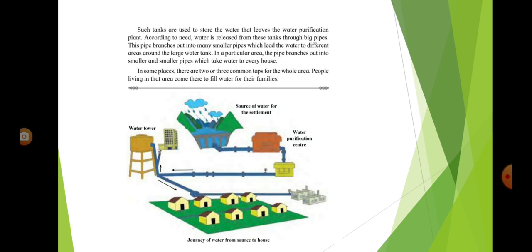In a particular area, the pipe branches out into smaller and smaller pipes which take water to every house. In some places, there are two or three common taps for the whole area. People living in that area come there to fill water for their families.